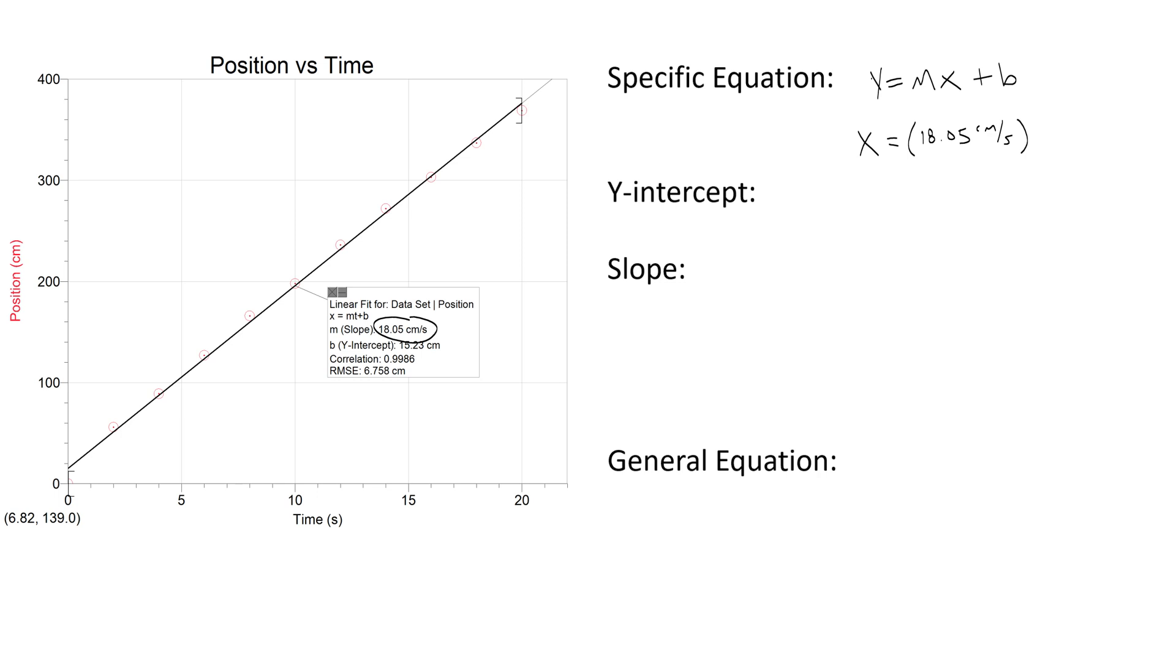Instead of an x-axis I have a time axis so I'm going to use lowercase t for the variable. Don't use uppercase T, we use that, it means a different thing. Then my y-intercept, I do have a y-intercept, it's 15.23 centimeters. So that's my specific equation, but what I want to do first is try and figure out whether or not I should have a y-intercept and if it's important.